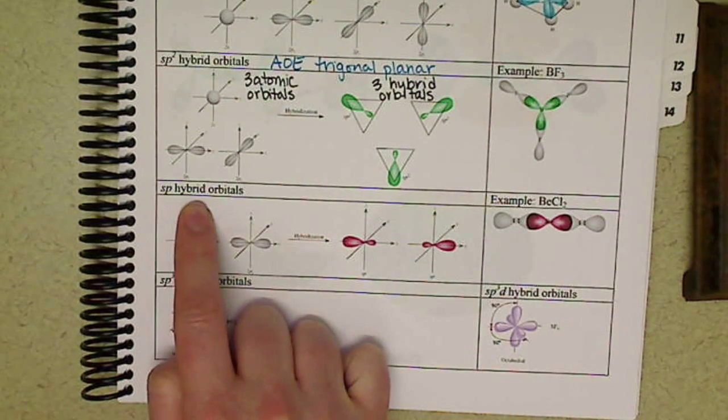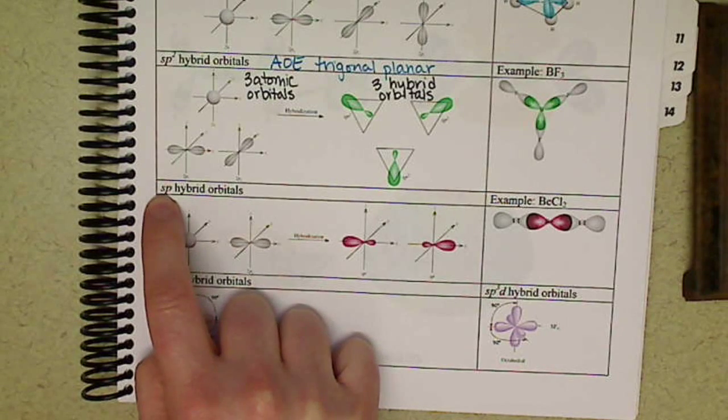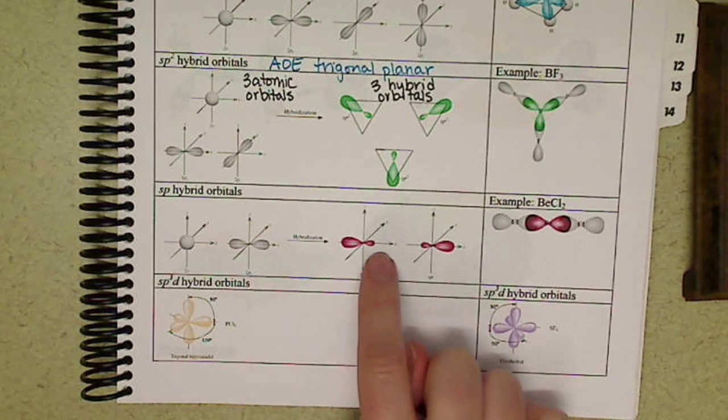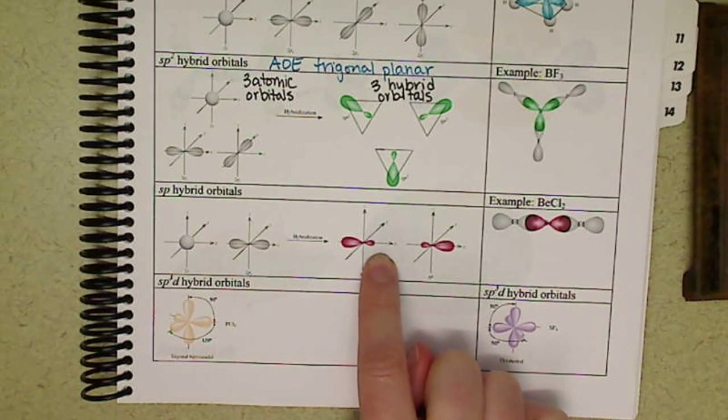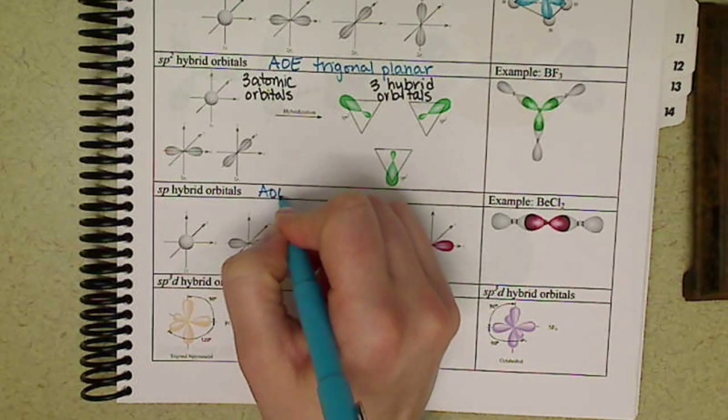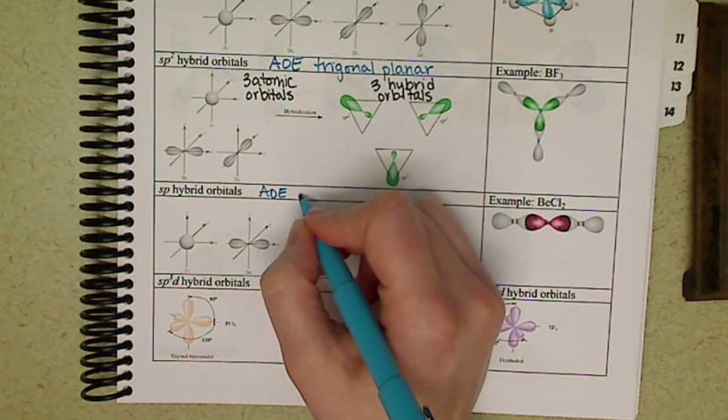SP hybrid orbitals - two atomic orbitals, the S and one of the P's. Two atomic orbitals get us two hybrid orbitals, two areas of electrons, that corresponds to an arrangement of electrons of linear.